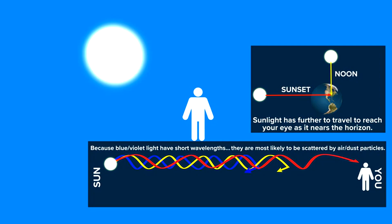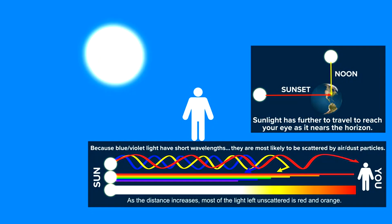Now, because blue and violet light have short wavelengths, they are most likely to be scattered by air and dust particles, leaving just the red or orangish colors to make it all the way to us.